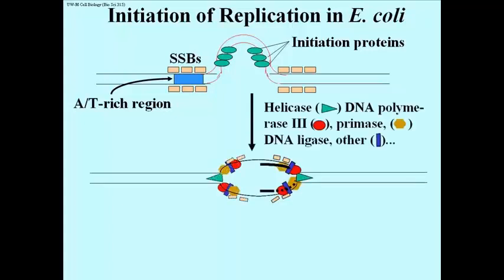Next, DNA polymerase 3 and primase enter the complex, along with other proteins. One of these other proteins is helicase, an ATP-dependent enzyme that's going to move in the replication fork to unwind more and more of the DNA as it hydrolyzes the ATP.